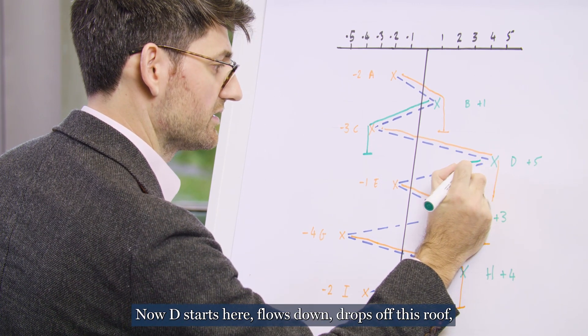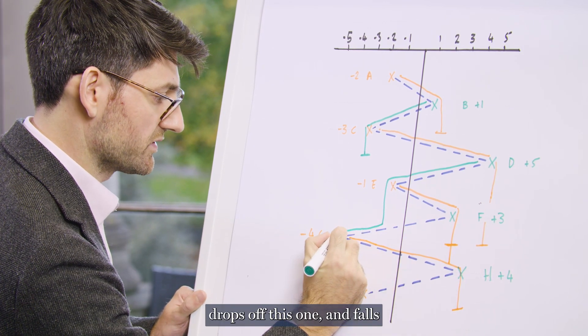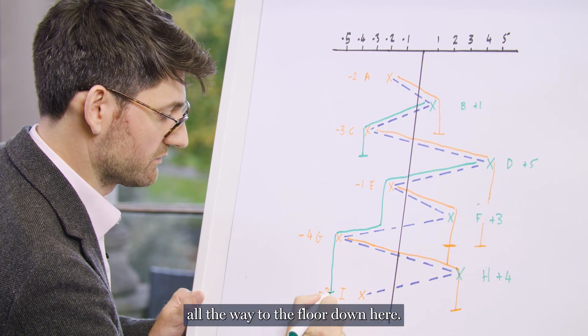Now D starts here, flows down, drops off this roof, lands on this roof, drops off this one and falls all the way to the floor down here.